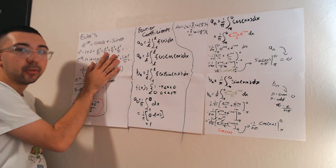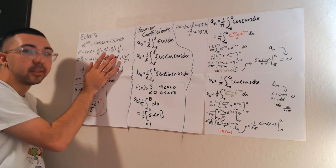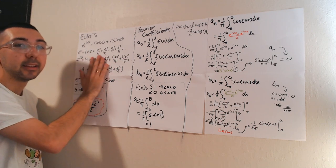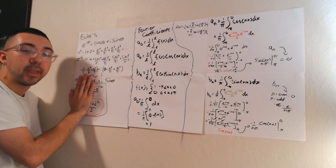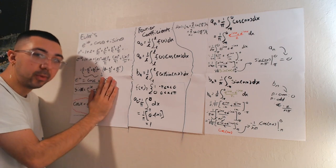We get that from writing out e to the i theta in the series expanded form. Basically what we're going to get is a bunch of terms without i and a bunch of terms with i.